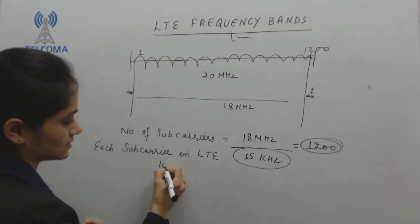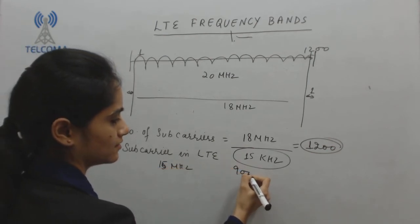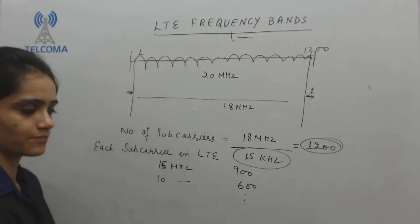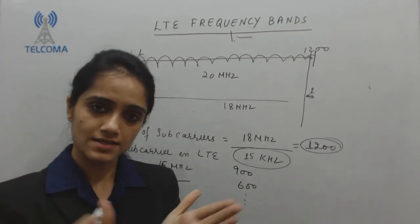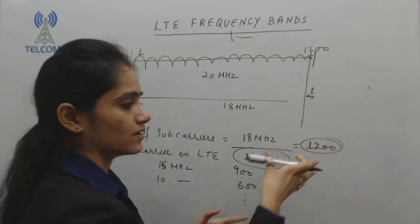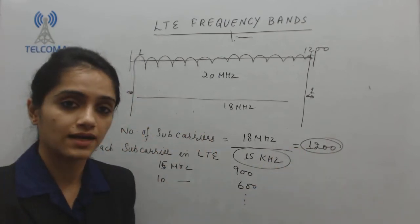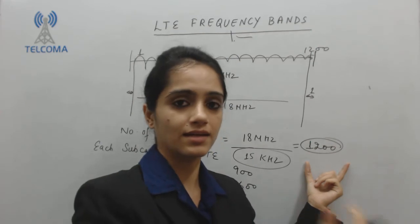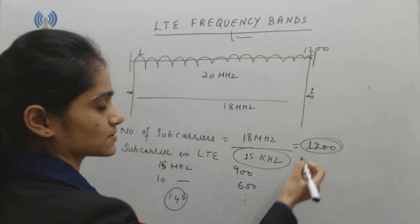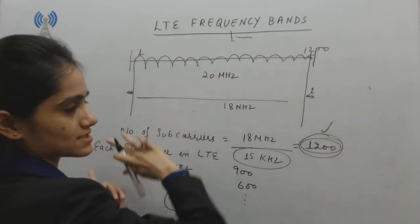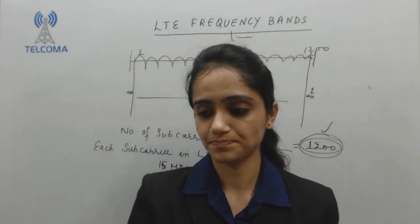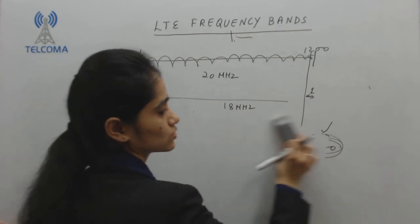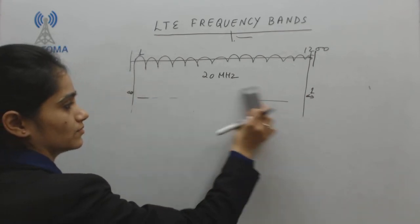Comparing with other bandwidths: with 15 megahertz I have 900 subcarriers, and with 10 megahertz I have 600 — the number keeps decreasing. With fewer subcarriers, you get less speed, such as in the 1.4 megahertz case. As bandwidth increases, the number of subcarriers increases. The calculation process is the same for all bandwidths — you always leave 10 percent of the actual bandwidth.